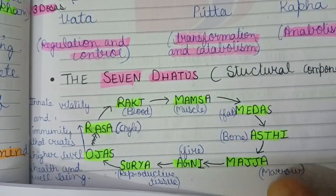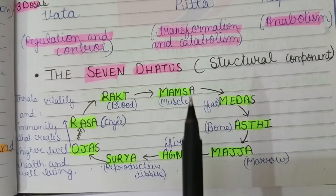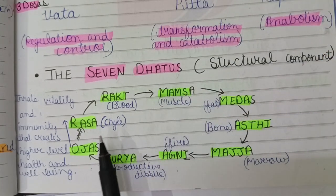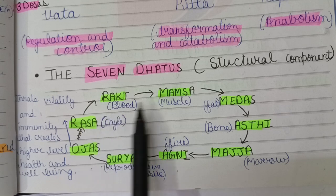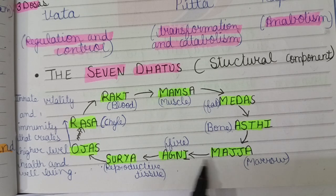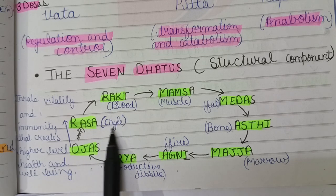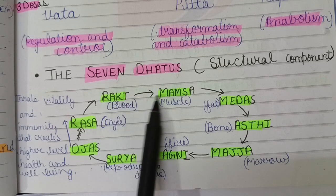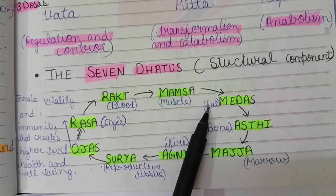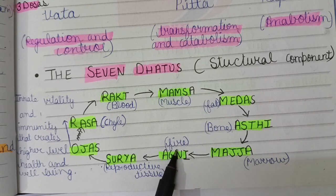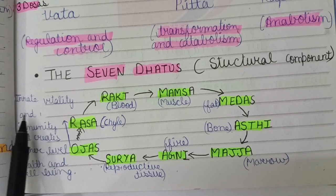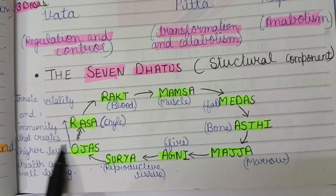Next we discuss the seven Dhatus, which are the structural components of our body. The seven Dhatus are Ras, Rakta, Mamsa, Meda, Asthi, Majja, and Shukra. Ras means the food we eat; from this becomes blood (Rakta), from blood to muscles (Mamsa), muscles to fat (Meda), fat to bones (Asthi), bones to marrow (Majja), and then to reproductive tissues (Shukra). Ojas is the innate vitality and immunity that creates a higher level of health and well-being.